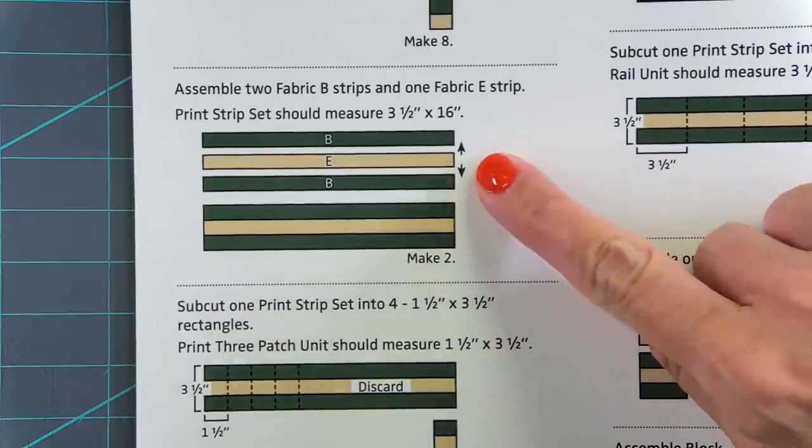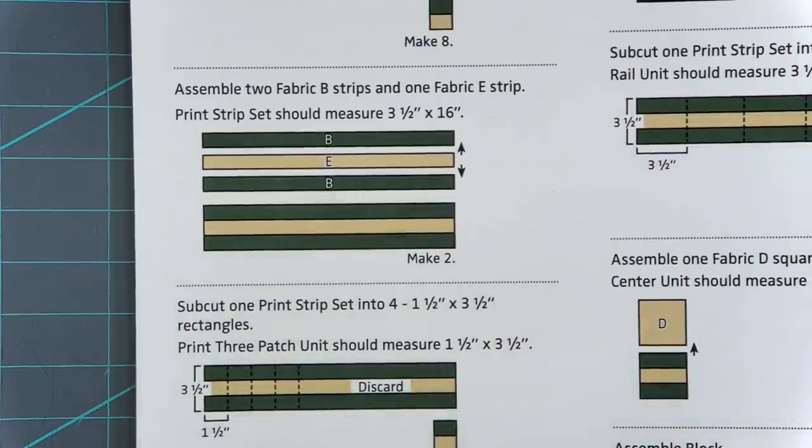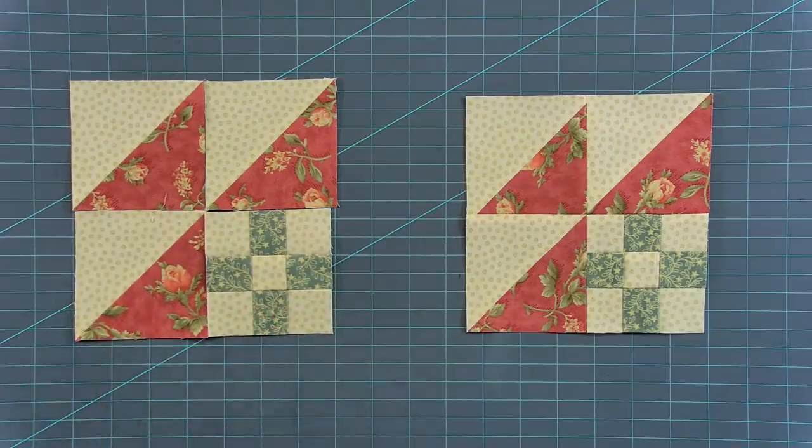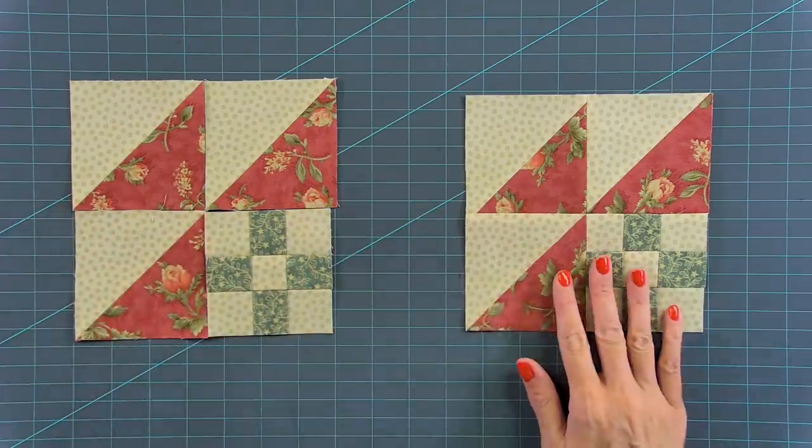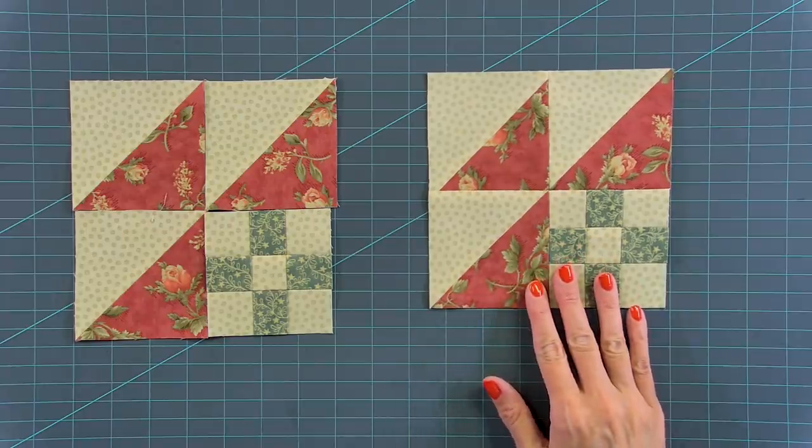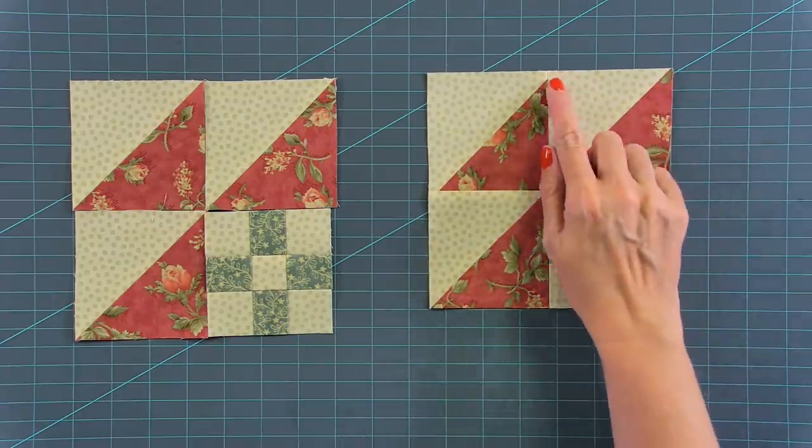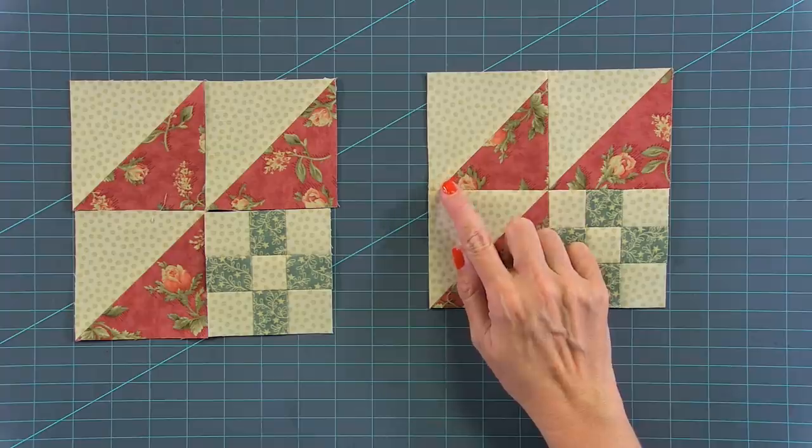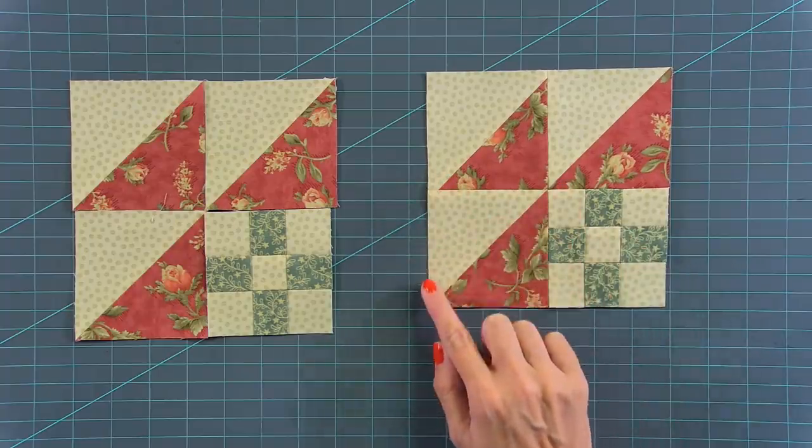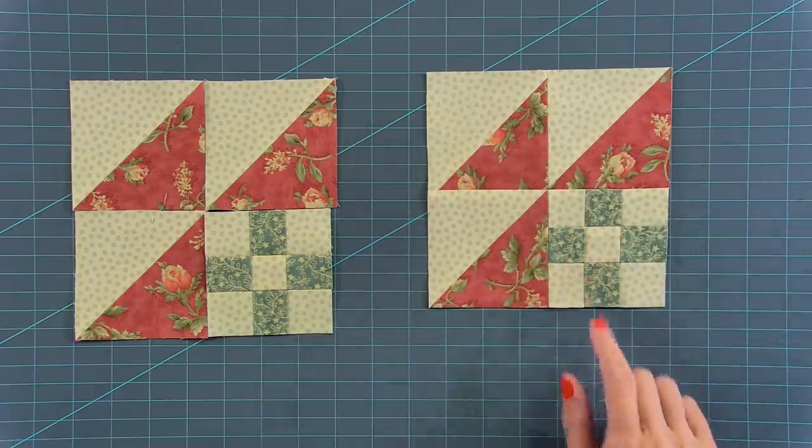And that's how you press. And then you'll pin these together and sew that with a quarter inch seam. And this is how your corner unit looks. And if you have used triangle paper and if you've pinned along the way, you're going to have a nice square unit and you're going to make four.